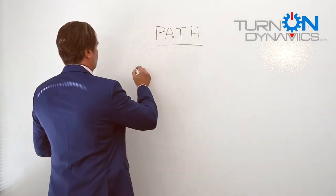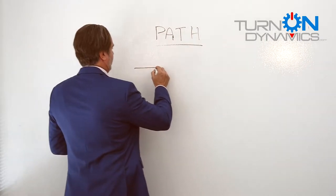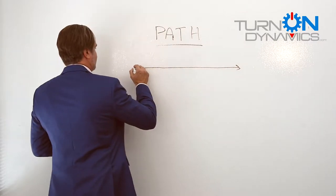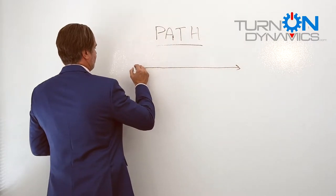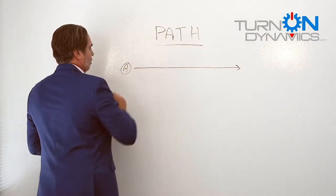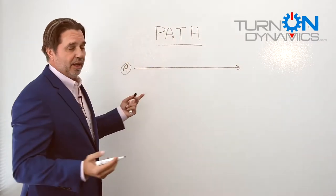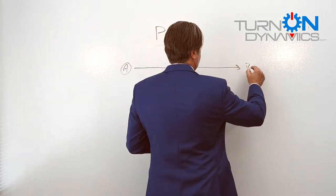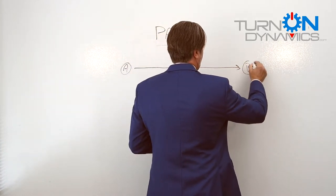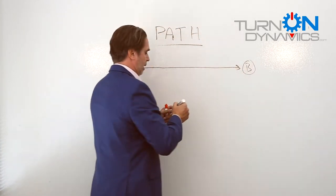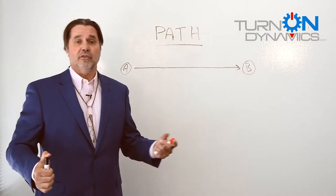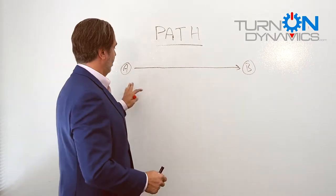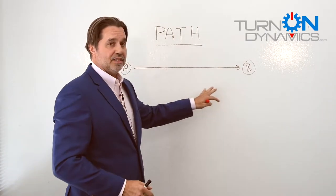What we typically see with an AX upgrade is what I call a linear process. You have version A of your AX software, and you want to upgrade to version B. So typically your considerations were cost and time to upgrade — a very straightforward process.